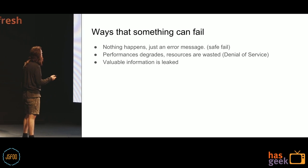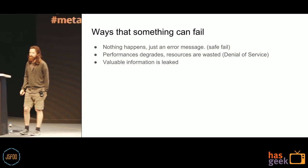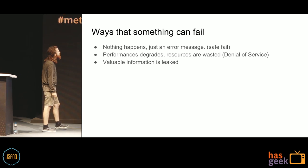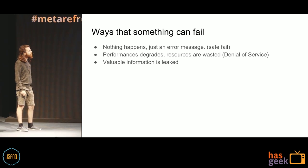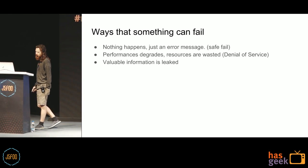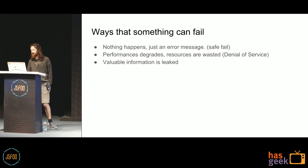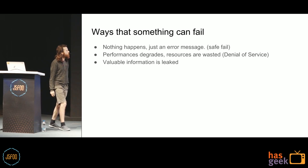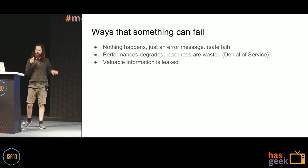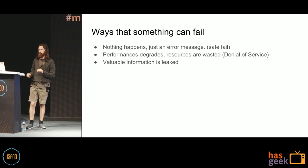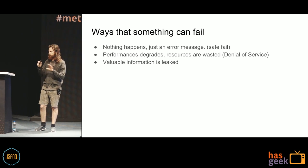Some ways a system can fail: nothing happens is the best one; an error message if you're lucky. Next, performance degrades and resources are wasted, which can be a denial of service. Valuable information is leaked. The attacker gains some control over the system — for example, they become authenticated when they shouldn't have been. And the worst case: they gain total control and can execute arbitrary code, making your system do anything they like.